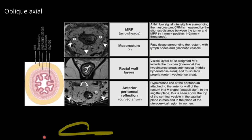These are T2-weighted oblique axial images showing rectal wall layers, mesorectum, mesorectal fascia, and anterior peritoneal reflection. The lumen is surrounded by a hypointense line — the mucosa — while the submucosa is the middle hyperintense area and muscularis propria is the outer hypointense area. Surrounding the rectum is fatty tissue known as the mesorectum, which contains lymph nodes and lymphatic vessels. A thin low signal intensity line surrounding the mesorectum is the mesorectal fascia.